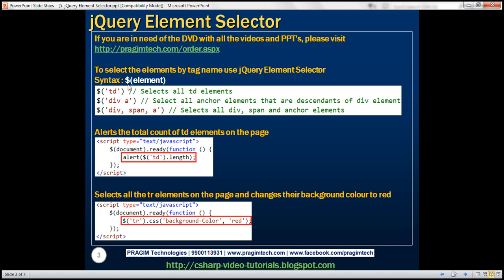Here is the syntax. To the $ function, that is, to the jQuery function, we pass the element tag name. The first example is going to return all the TD elements. So to the $ function, we are passing the TD tag name within quotes, and this is going to return all the TD elements.